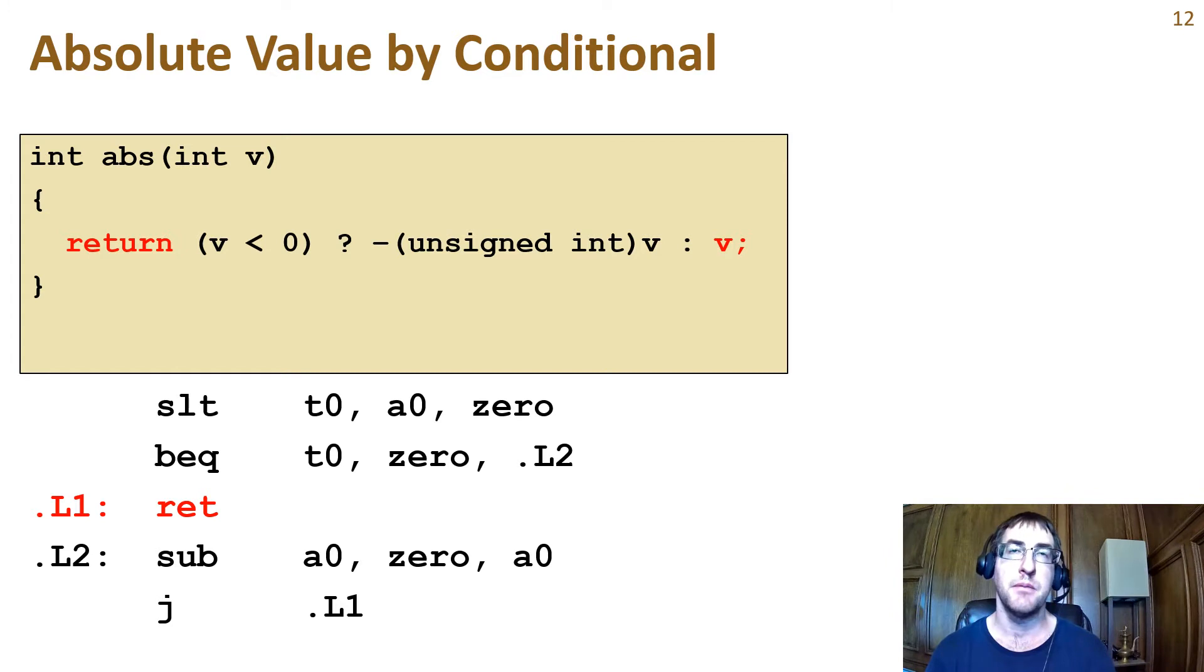Let's follow the not taken branch case first. We sometimes call this the fall-through case because the program falls through the jump instead of hopping. This case is simple. Return V. Since V is in A0 already, it is ready to return. So the fall-through code is just a RET pseudo instruction.